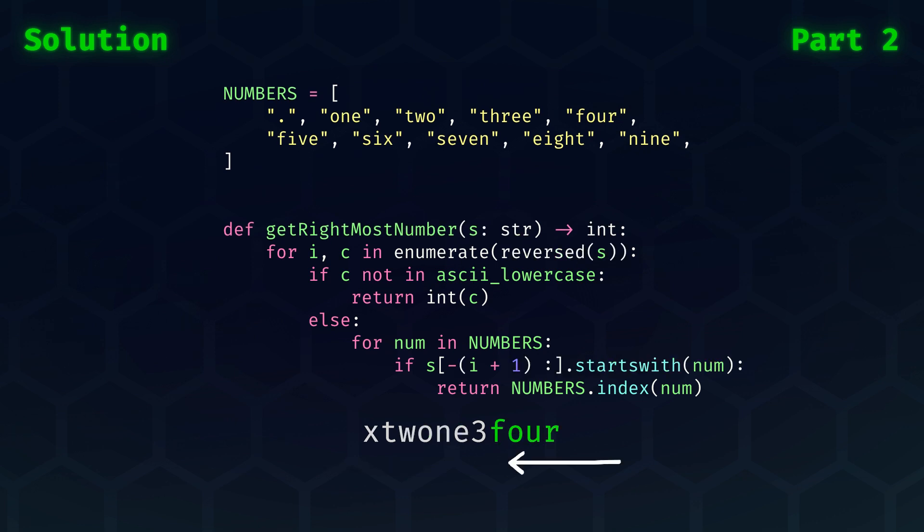Getting the rightmost number is almost the same, but remember that we need to process our string from right to left. The key difference, then, is that we enumerate the reversed string. Note here that the index i will still start at zero, so we will have to index at negative i plus one to make sure that we start checking substrings from the end of the string itself.